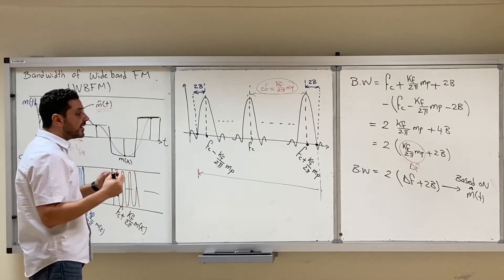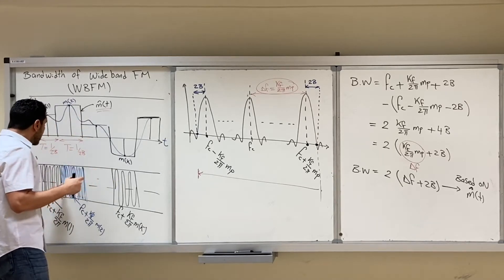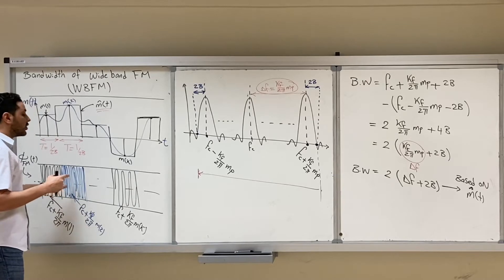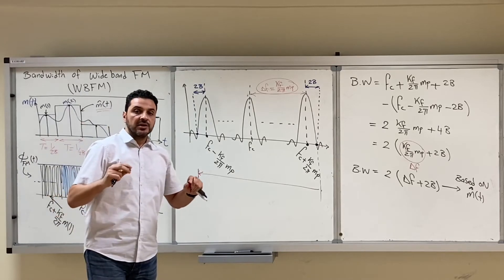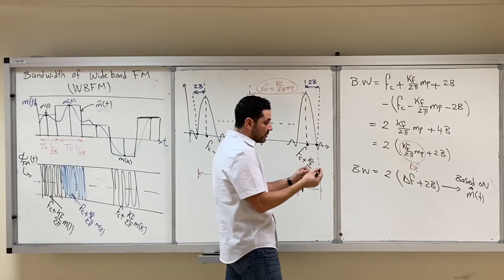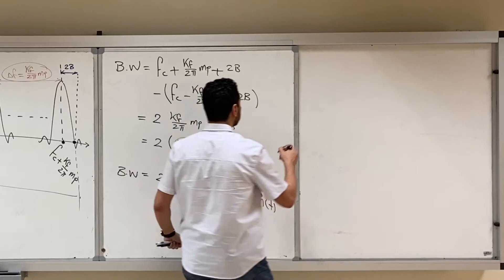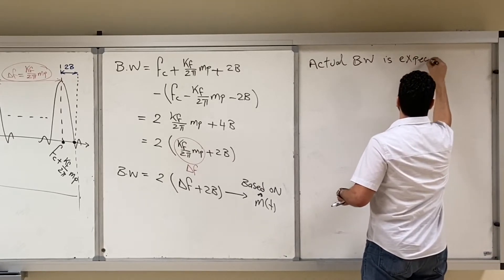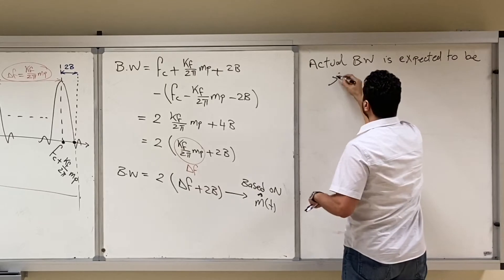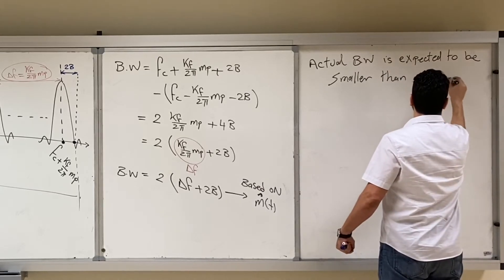So you expect that because of the sharp edges of m̂(t), these sharp edges lead to sudden changes in the frequency of the FM signal — a certain frequency suddenly changes to another. This sudden change in frequency leads to bigger bandwidth. Therefore, the actual bandwidth based on m(t) is expected to be smaller than 2Δf + 2B.